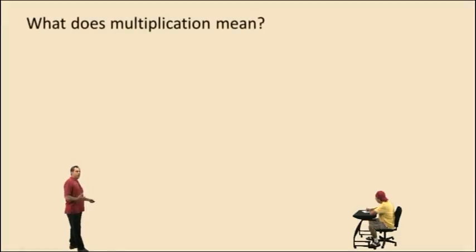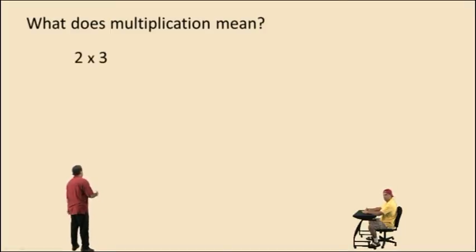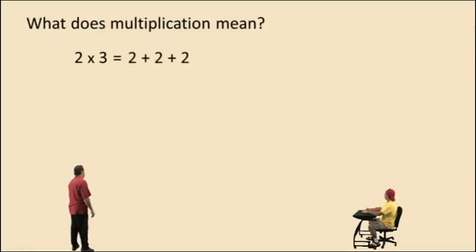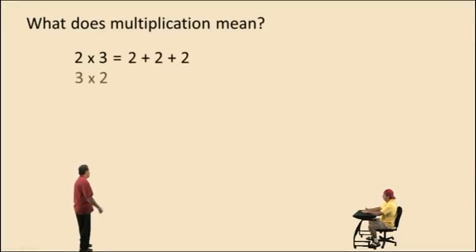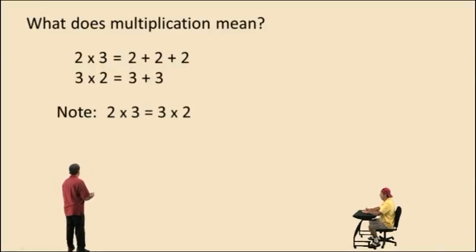Well what does multiplication actually mean? Multiplication is actually repeated addition of the same number. So multiplication is really addition. Two times three means take three twos and add them together. Three times two means take two threes and add them together, and both results are six. So notice here that two times three is equal to three times two.